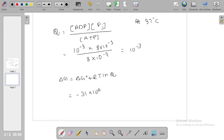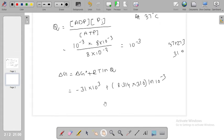We need to convert kilojoule into joule, so 31 × 10^3. R is 8.314, T is 37 degrees centigrade, so 37 plus 273 equals 310 Kelvin. ln Q is ln 10^-3. So we have minus 31,000 plus 8.314 times 310 times minus 3.